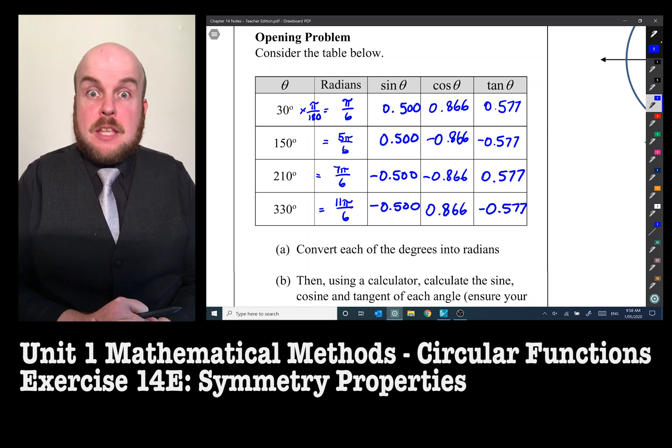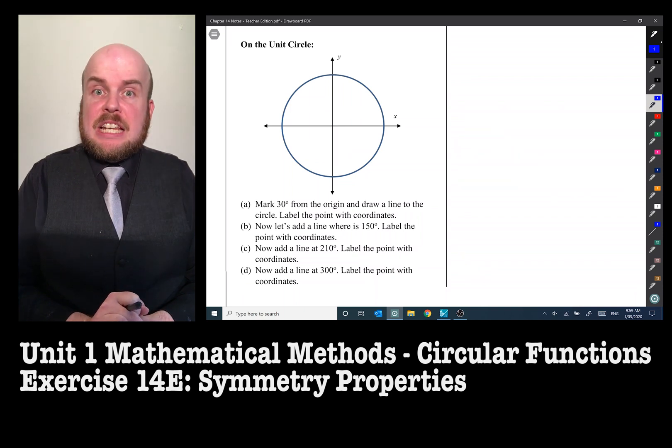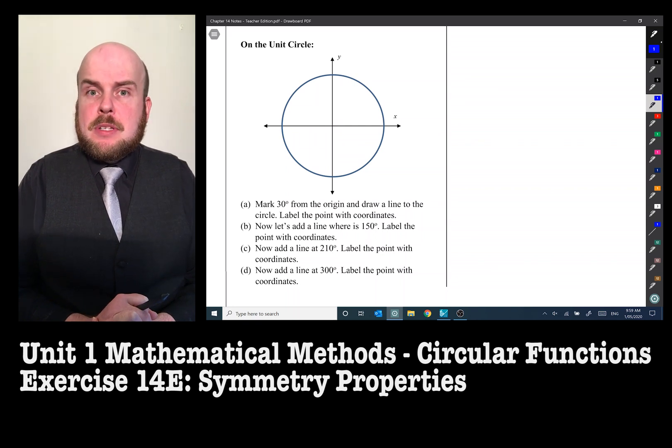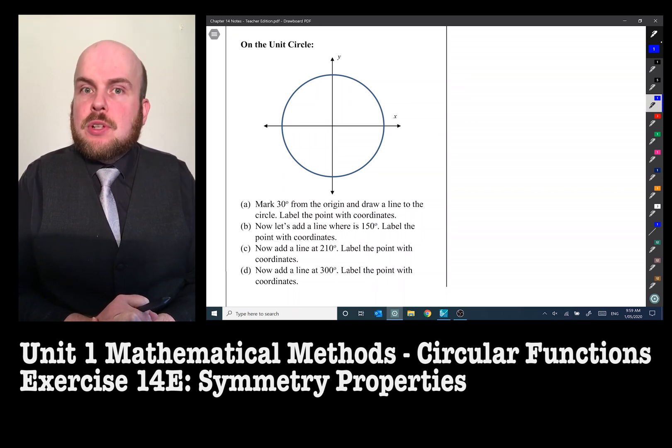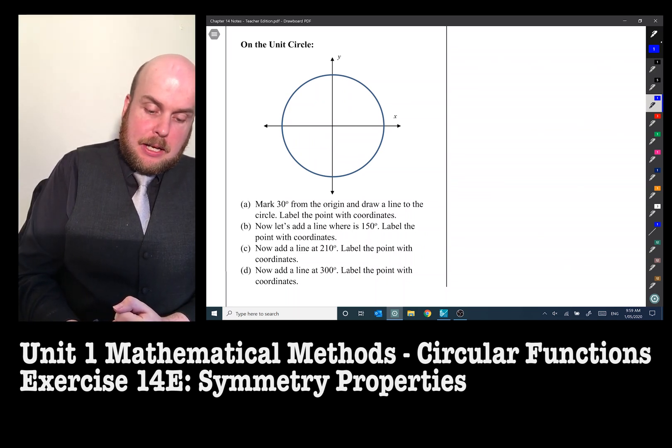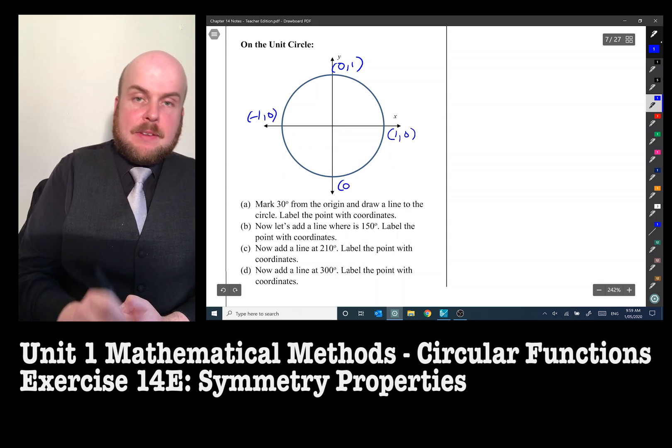Let's have a look at the unit circle. We're needing to mark 30 degrees from the origin and draw a line to the circle, and what we'll need to do is label a point with coordinates. We're going to measure it up and then we're going to label the coordinates once we've drawn the picture. Remember that the radius for a unit circle is equal to 1. So if we put in all of our coordinates, we have 1,0, 0,1, -1,0, and 0,-1.